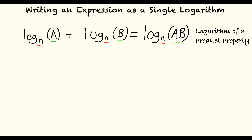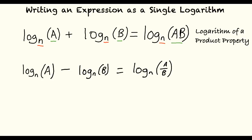Next, the logarithm of a quotient property. To illustrate this property: the log base n of a minus the log base n of b equals log base n of a over b. This property also allows us to combine two logarithmic expressions with the same base n. When subtracting logarithms with the same base, divide the first argument by the second argument to result in the simplified expression of the logarithm.